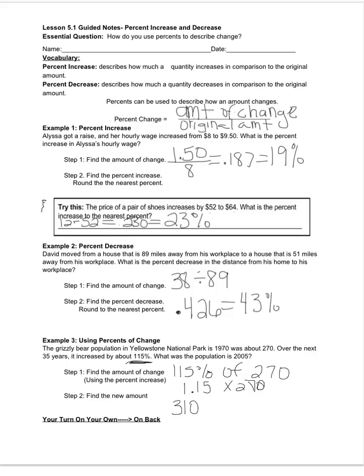But we want to find the new amount, so we have to add in how many bears there were already. So we're going to add in the 270, which equals 580 bears.